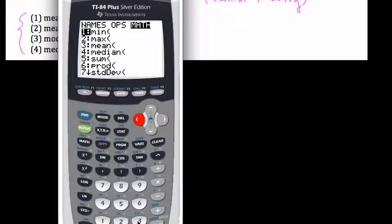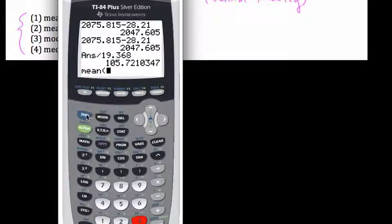So, I hit three for mean, and I want to find the mean of list number one. That's where I put my data. So, second one, that's list one. Hit enter.